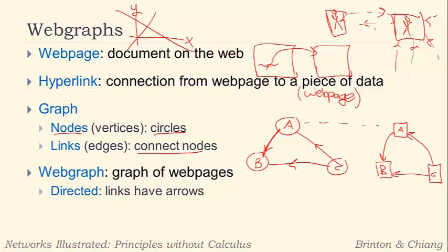So the way that we indicate a directed graph is by having the links have arrows. And as we said, a web graph does have directed links.